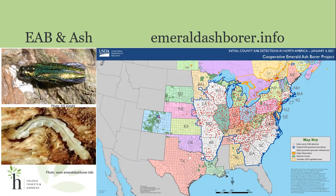This started back in the early 2000s, and our picture here of the map is the most up-to-date information on emeraldashborer.info locations where EAB has been detected. You can see how it's spread across the eastern region of North America — the main section of the U.S. where all different ash species reside. EAB has been moving steadily across the area since 2020, mostly expanding in southern regions like Louisiana, Georgia, and a few more over in Colorado.